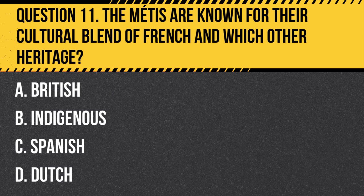Answer: B. Indigenous. The Métis people emerged in the 18th and 19th centuries in Canada as mixed-race descendants of European fur traders and indigenous women.